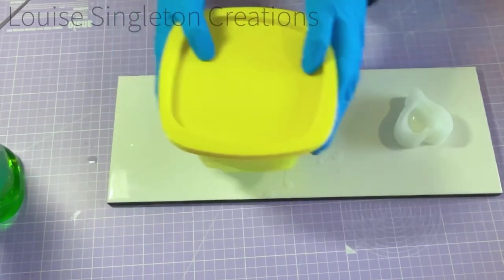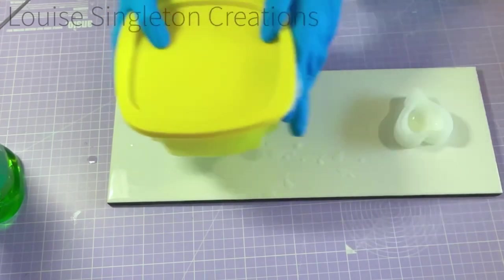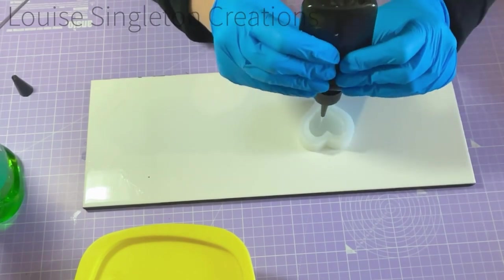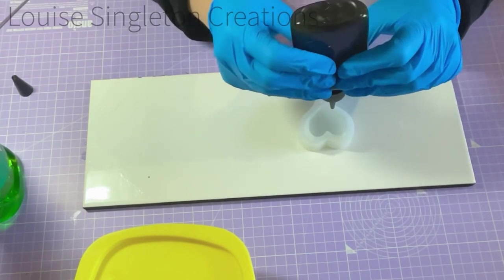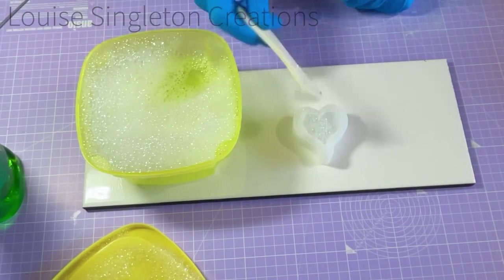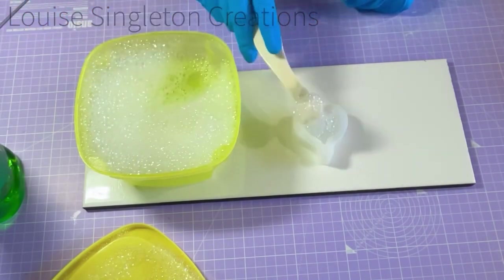You just put your UV resin into your mold—I did mine about halfway up—and then added the bubbles and put it under my UV lamp.